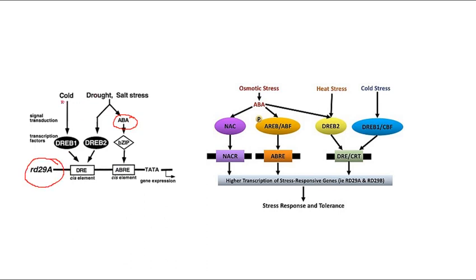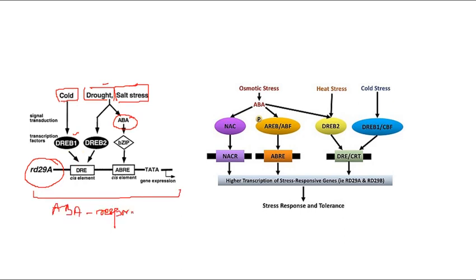DREB1 is activated in response to cold, drought, and salt stress. DREB proteins are activated in various stress responses, but in cold stress specifically DREB1 is activated, while DREB2 is activated in drought and salt stress. In an ABA-dependent manner, bZIP transcription factor is activated. DREB1 binds to DRE and bZIP binds to ABRE - both help in stress tolerance.